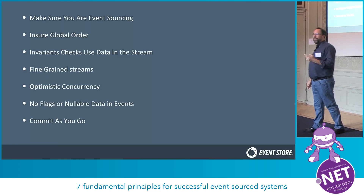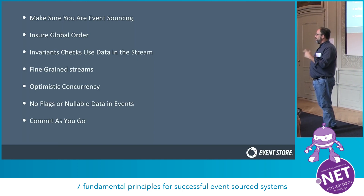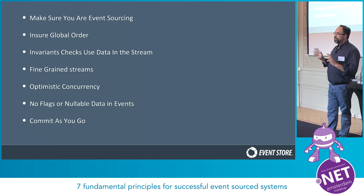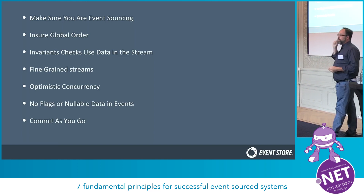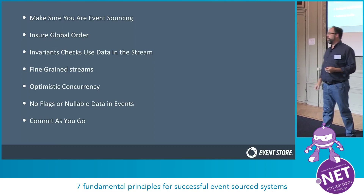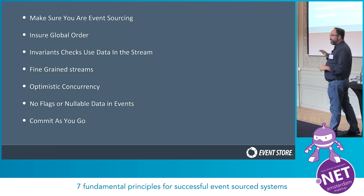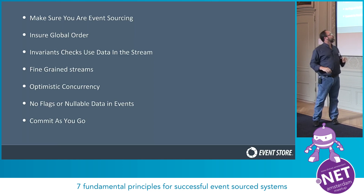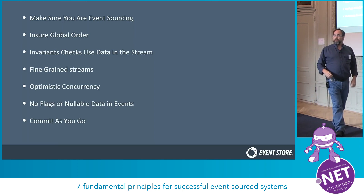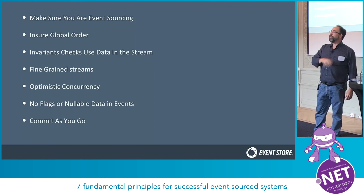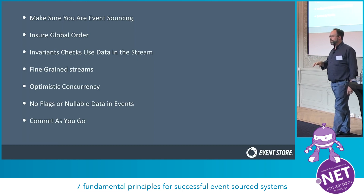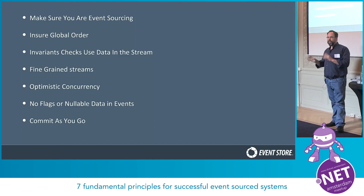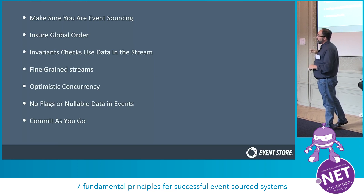One: make sure what you're doing is actually event-sourcing and not something that looks like event-sourcing. Two: ensure global order. Three: invariants — only use the stream. This is very similar to microservices — as soon as your services need other stuff, you get trouble. Four: fine-grained streams — you don't want to replay the world every time. Five: optimistic concurrency, which lets you be deterministic that the world hasn't changed underneath you while you're thinking. Six: no flags, no nullable data in your events. And seven: commit as you go.